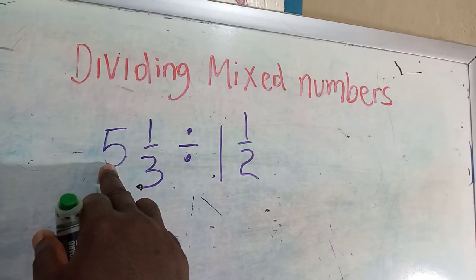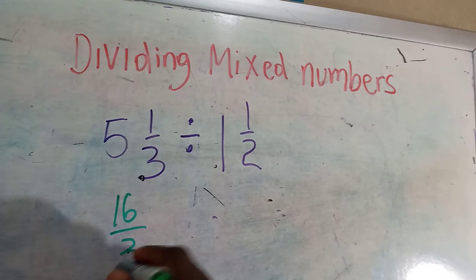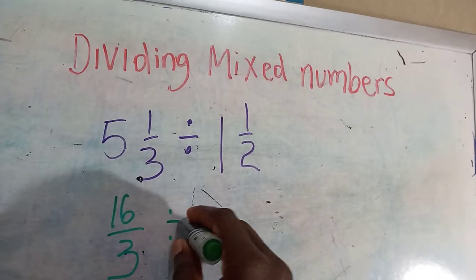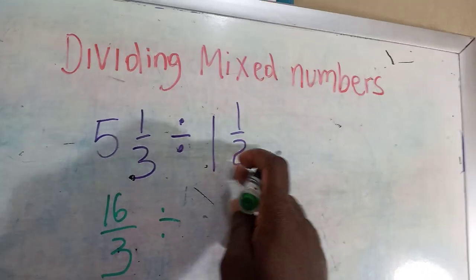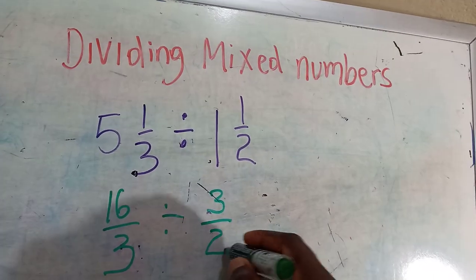3 times 5 is 15 plus 1, 16 over 3. 2 times 1 is 2 plus 1, 3 over 2.